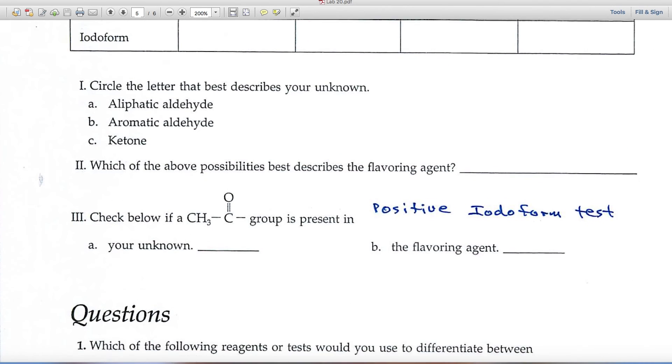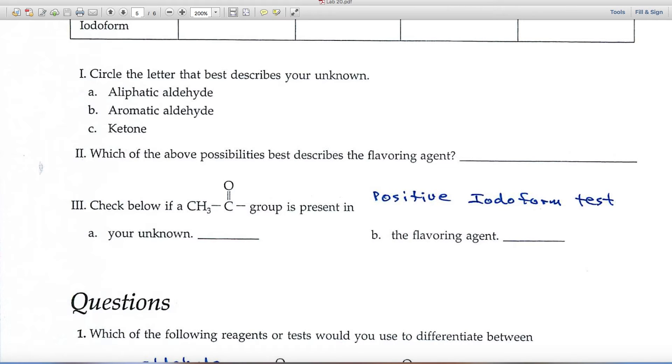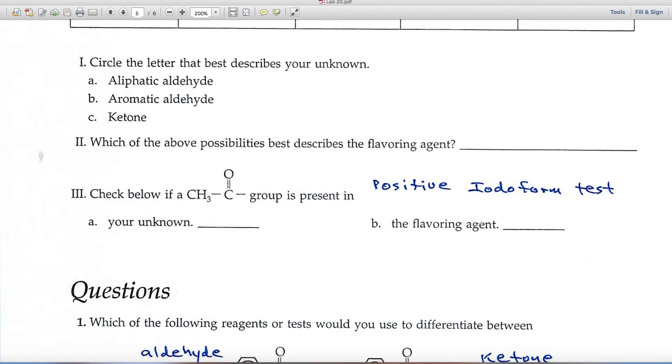And here too, in sort of a summary fashion, is question number three. It says, check below if that functional group is present in your unknown and flavoring agent. Well, that's the iodoform test. So if you've got a positive iodoform test, you'd say yes, it's present.